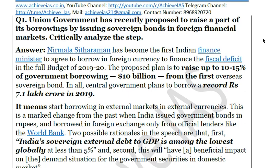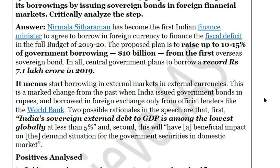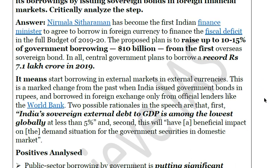We will be borrowing from external markets in external currencies — not in rupee but in foreign currency. This is a marked change from the past when India issued government bonds only in rupees. Let me clarify: this is not the first time India is borrowing externally. India has borrowed externally earlier as well, but the issuance of bonds was in rupees and not in dollars. Now we will be issuing sovereign bonds in foreign currency.